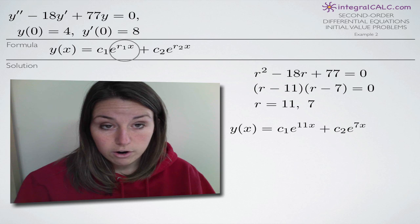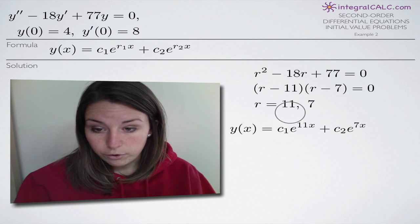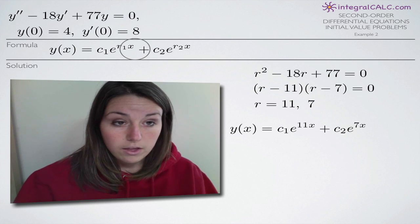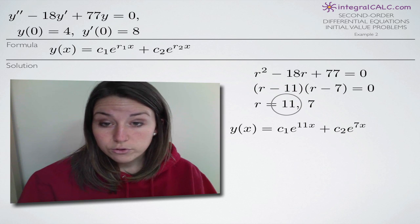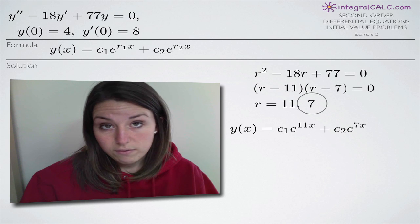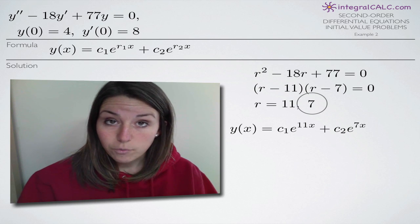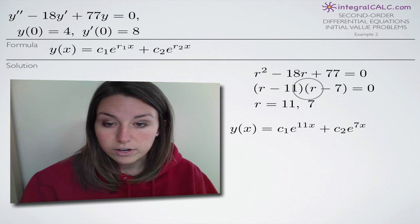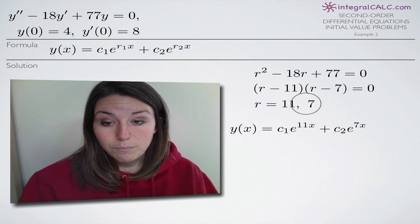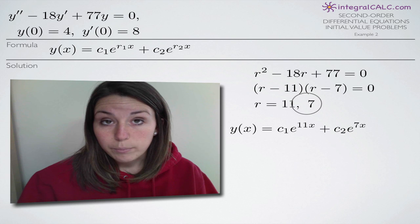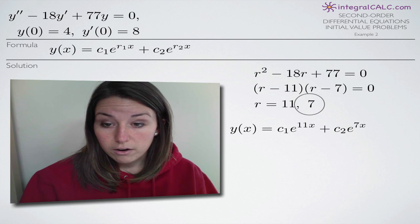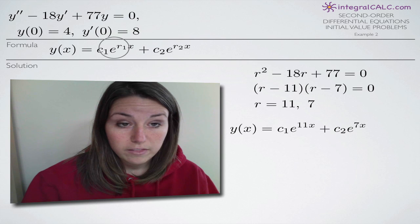We plug in 11 for r sub 1 and 7 for r sub 2. The reason we're using this particular formula is because we ended up with two distinct real roots — 11 and 7 — meaning these two solutions are real numbers and they are distinct from one another. If we had two of the same roots, like r minus 7 times r minus 7, that would require a different formula. And sometimes you end up with complex conjugate roots, which would be yet a third formula. In this case, with distinct real roots, we use this formula and plug them in for r sub 1 and r sub 2.